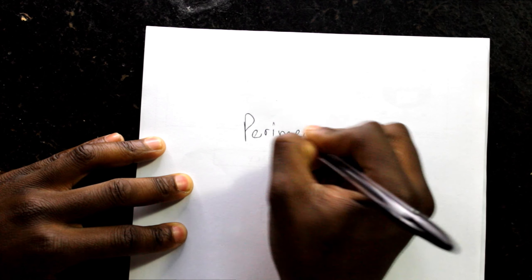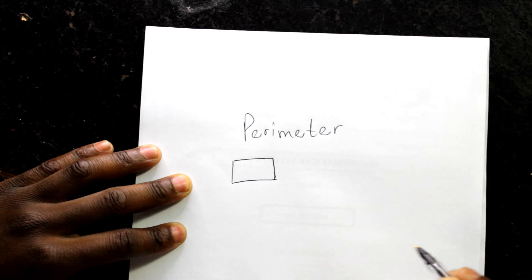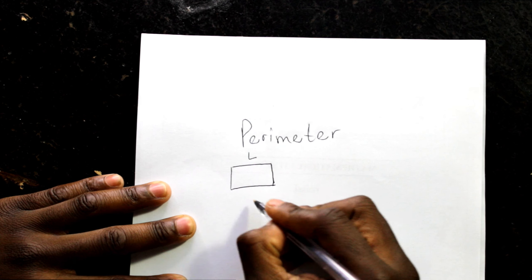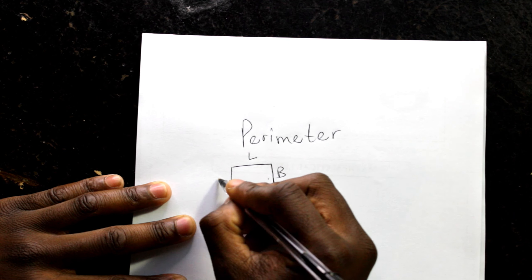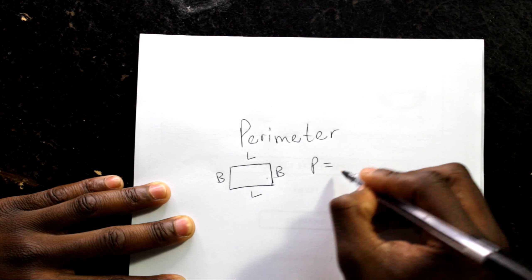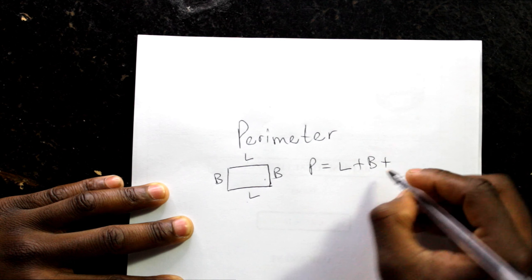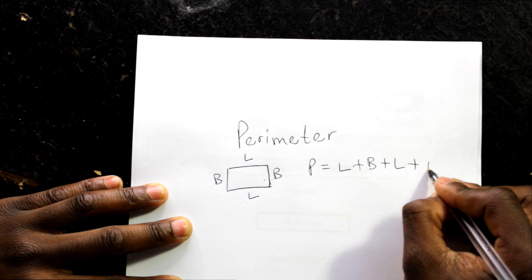The formula for perimeter. Since we know that perimeter is a measurement around an edge of an object. Speaking about a rectangle, it has length, length, breadth and breadth. Therefore, the formula will say perimeter: length plus breadth plus length plus breadth.